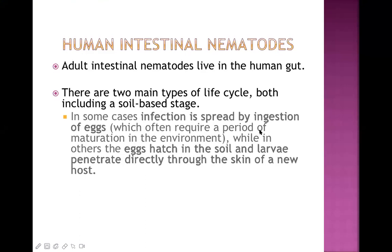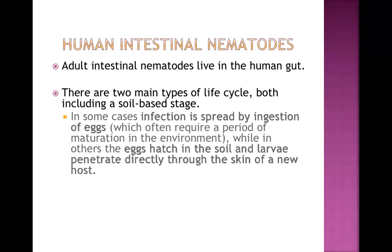In some cases, infection is spread by ingestion of eggs — our food or water may be contaminated with soil containing eggs of that particular nematode. In other types, the egg hatches in the soil and develops into a penetrating type of larva, which can directly enter the body through the skin and cause infection. So one route is ingestion of eggs, and the second is penetration through the skin.